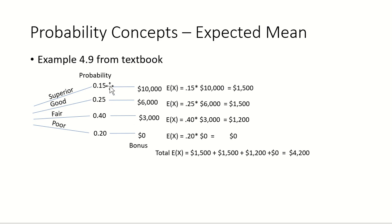The probabilities are: there's a 15% chance the person gets evaluated as superior, 25% for good, 40% for fair, and 20% for poor.